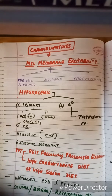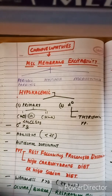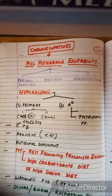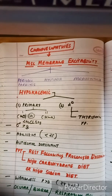In hypokalemic periodic paralysis, males are affected more than females. It affects the adolescent group and is never seen after 25 years of age. If hypokalemic periodic paralysis presents after 25 years of age, you should exclude thyrotoxic periodic paralysis. It is autosomal dominant.